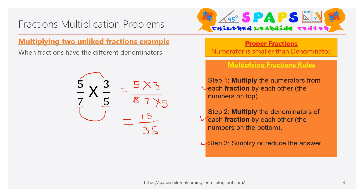Both the numerator fifteen and denominator thirty-five share a common factor of five. Divide fifteen by five to get three, and thirty-five by five to get seven. You get three by seven. Three and seven share no common factor, so this is the simplest form. The answer for this equation is three by seven.